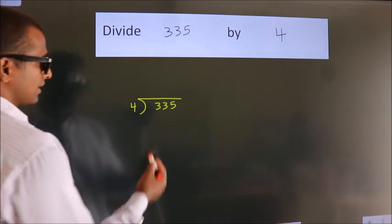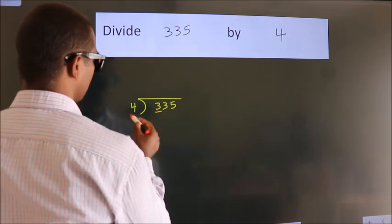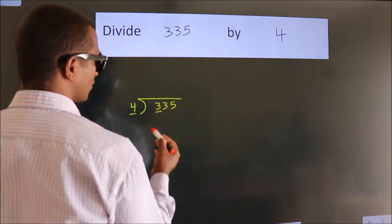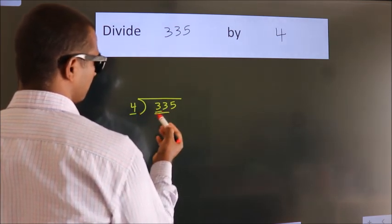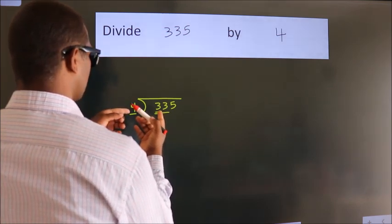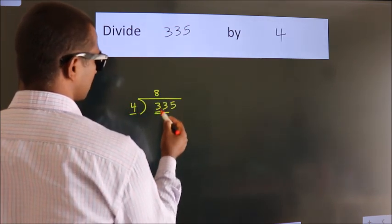Next, here we have 3, here 4. 3 is smaller than 4, so we should take two numbers: 33. A number close to 33 in the 4 table is 4 times 8, which is 32.